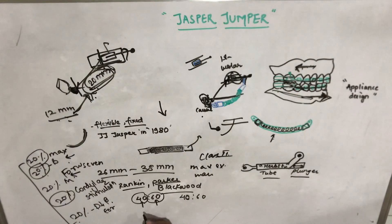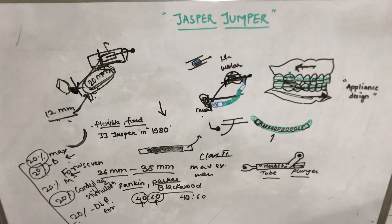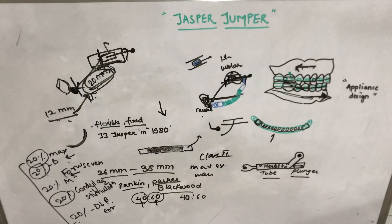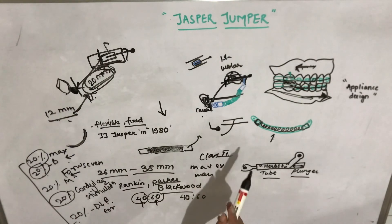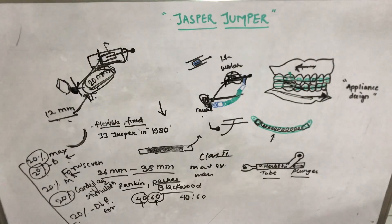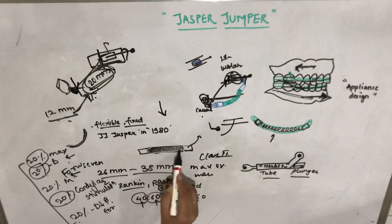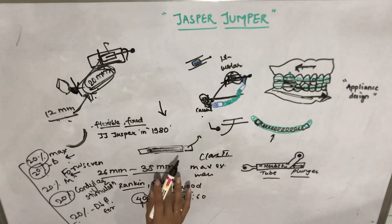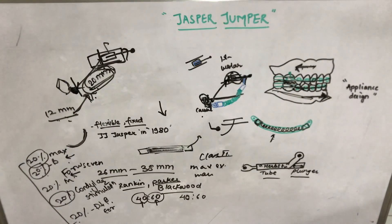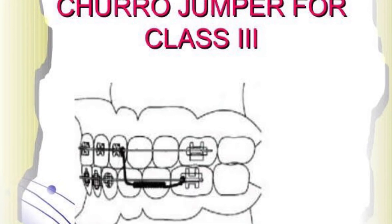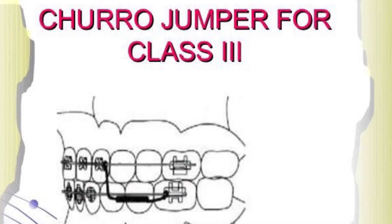The advantages of the Jasper Jumper are: it produces continuous forces as it is a fixed appliance the patient cannot remove; it does not require patient compliance for timely wear; it allows a greater degree of mandibular freedom than the Herbst appliance due to its flexibility; and oral hygiene is easier to maintain because of the polyurethane covering. A 'tutorial jumper' used for Class 3 has the same design, but with posterior attachment on the mandible and anterior attachment on the maxilla.